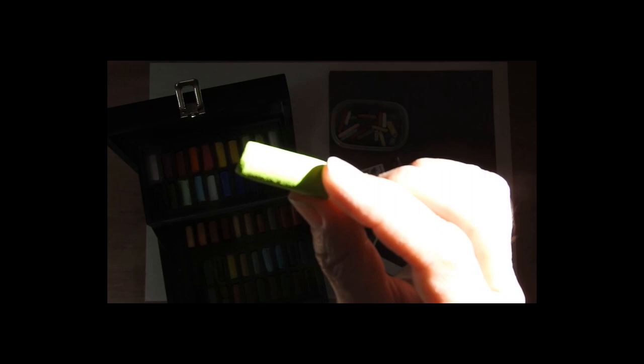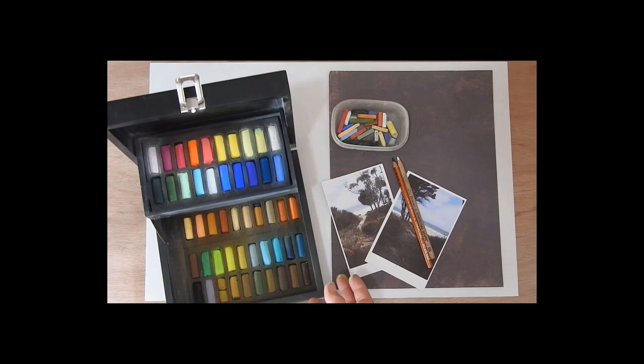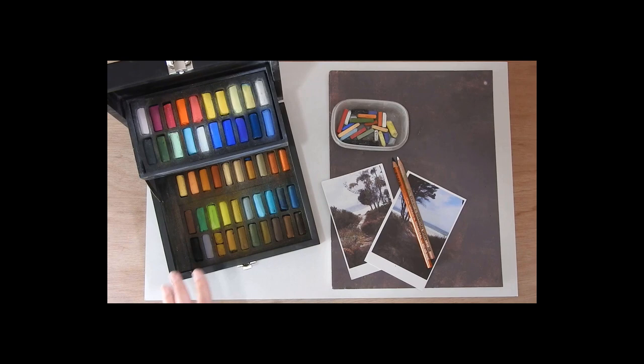They're not as big as the normal ones, they're half the size of a normal Sennelier. And they're great because they already come with the papers off. You don't have to break them to get them to the right length to work effectively with.